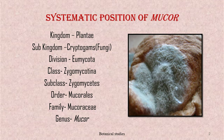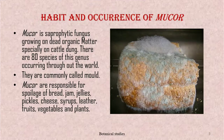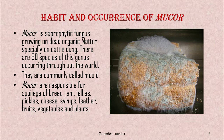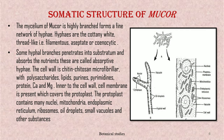Mucor belongs to family Mucoraceae, genus Mucor. Mucor is a saprophytic fungus that grows on dead organic matter, especially on cattle dung. There are 80 species of this genus occurring throughout the world; they are commonly called mold. Mucor is responsible for spoilage of bread, jam, jellies, pickles, cheese, syrups, leather, fruits, vegetables, and plants.